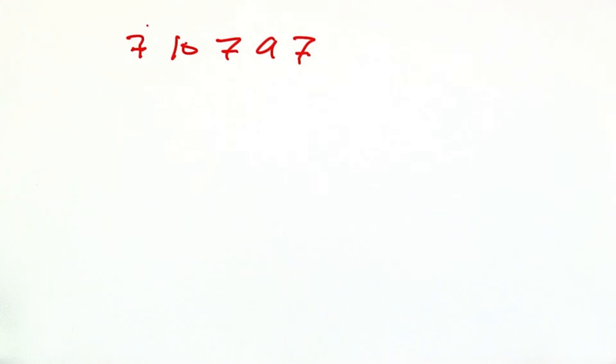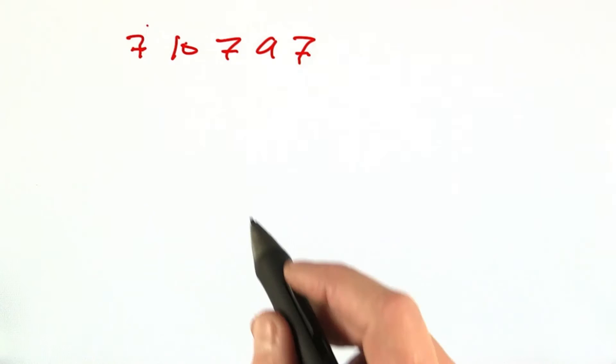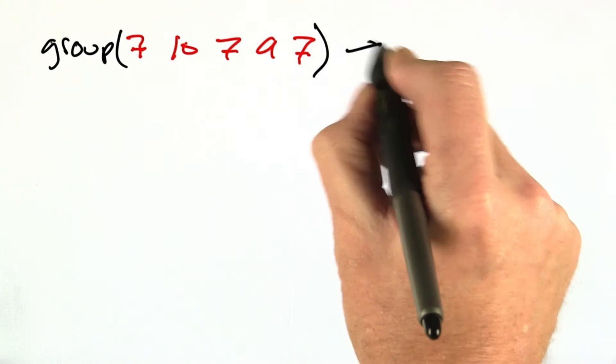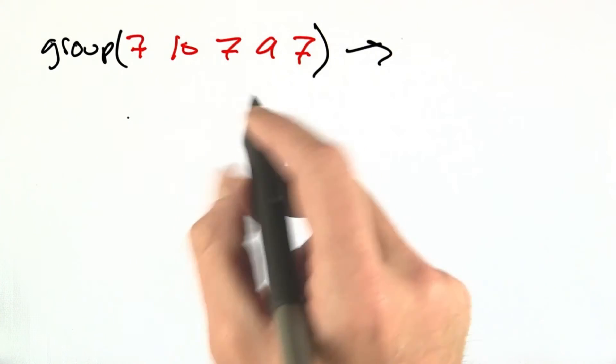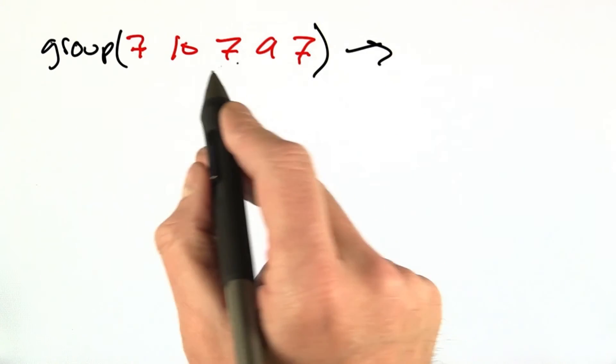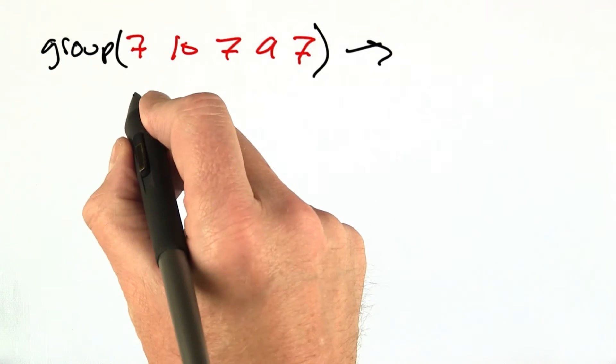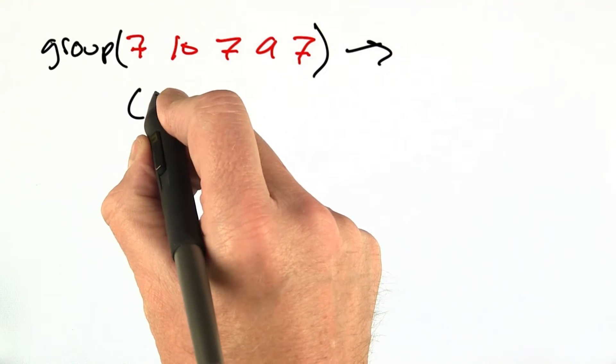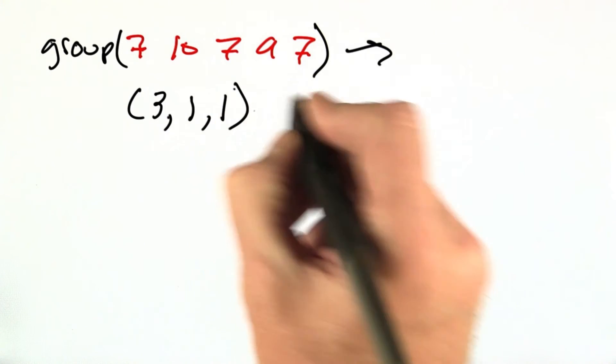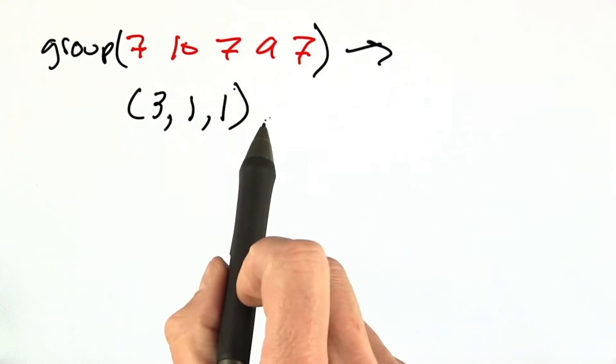I can do that using this function that I'll call group. We group this hand, and group is going to return two values. First, it's going to return the counts for each of the different kinds of card ranks. Here we have 3 7s, and 1 10, and 1 9. Those counts are going to be sorted biggest first.